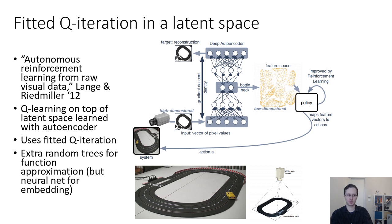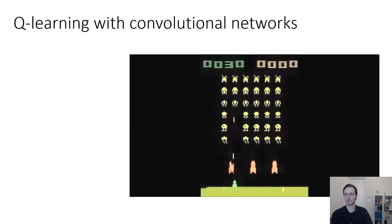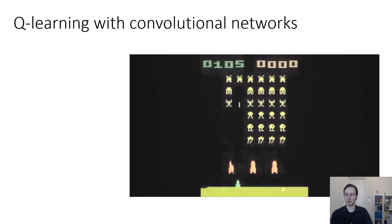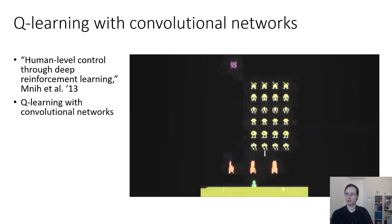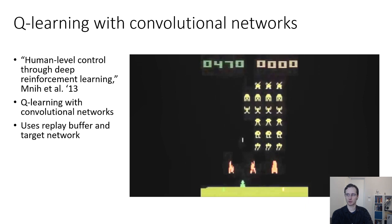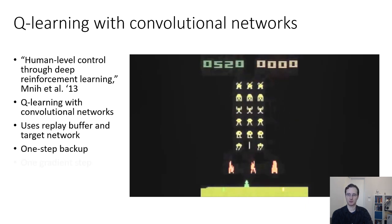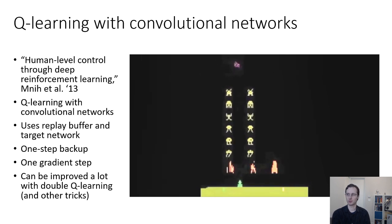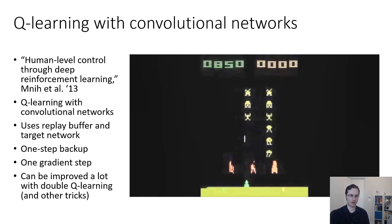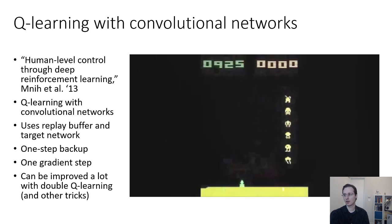Extra-random trees are basically very similar to random forests. The demonstration in this paper uses an overhead camera to look at a slot car racetrack and learn to control the slot car to drive around it. The next paper uses convolutional neural networks with Q-learning — this is deep Q-learning. 'Human Level Control Through Deep RL' uses Q-learning with convnets, replay buffers, target networks, a simple one-step backup, and one gradient step to play Atari games. For homework 3, you'll be implementing something fairly similar to this paper.